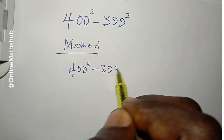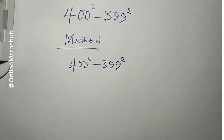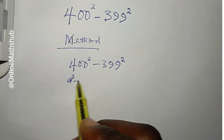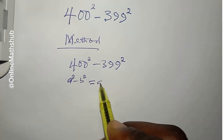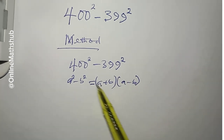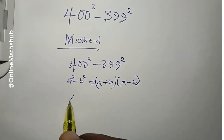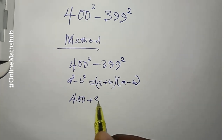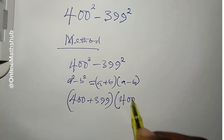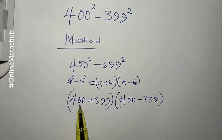The first method is to use the idea of difference of two squares. If you have a squared minus b squared, you can expand this as (a + b)(a - b). In this case, our a is 400 and our b is 399. So if I simplify this, I'm going to have (400 + 399) multiplied by (400 - 399).